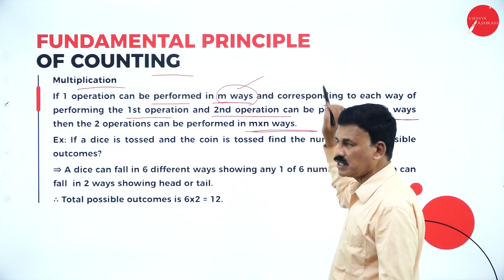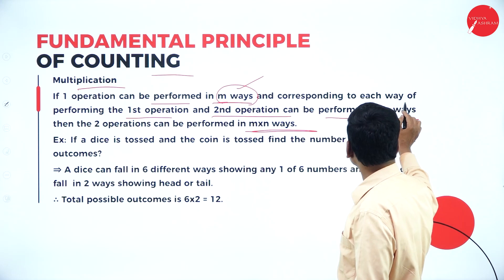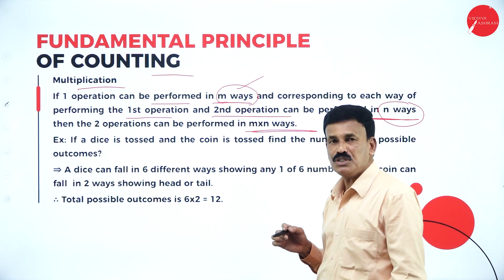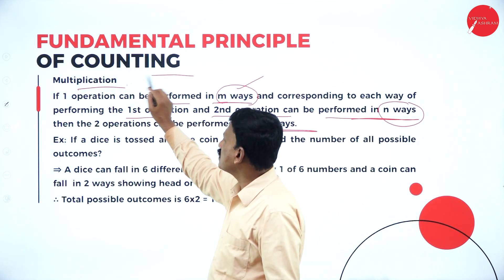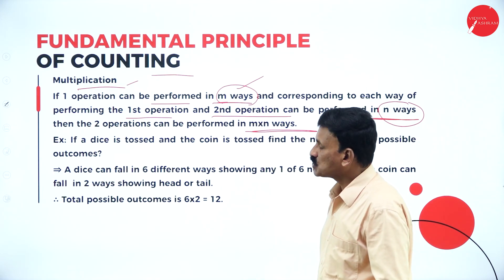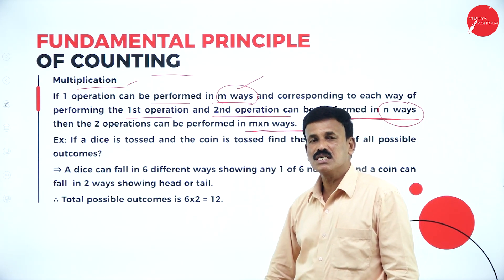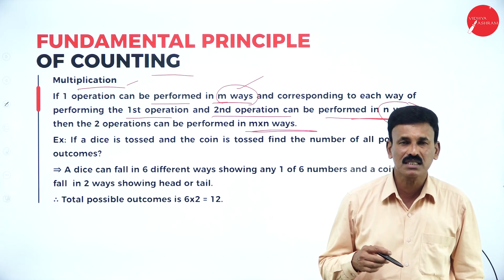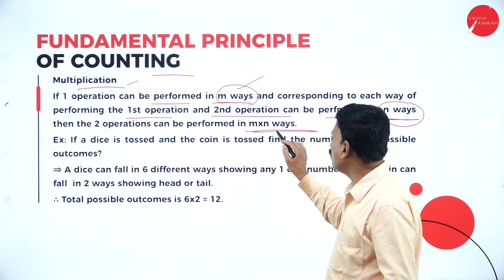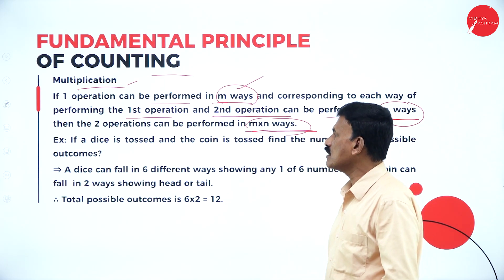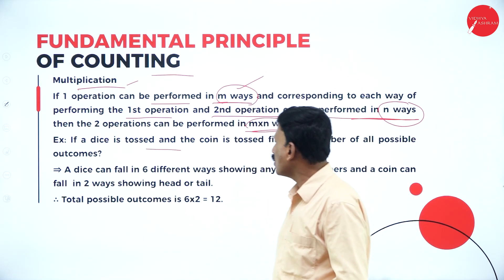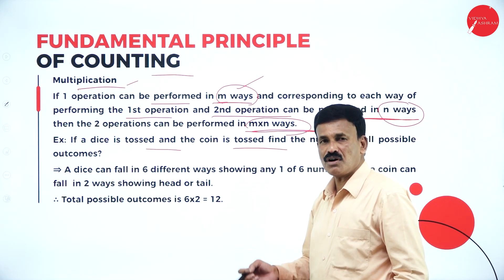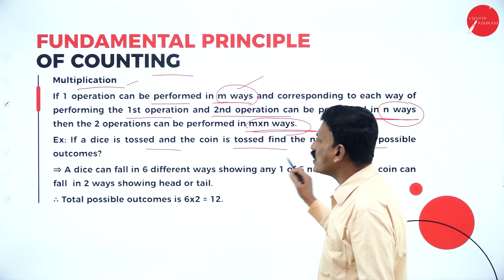Suppose if one operation is performed in M ways and another operation is performed in N ways, then the two operations can be performed in M into N ways — that is called the fundamental principle of multiplication. Now let us consider an example: if a die is thrown and a coin is tossed, find the number of all possible outcomes.